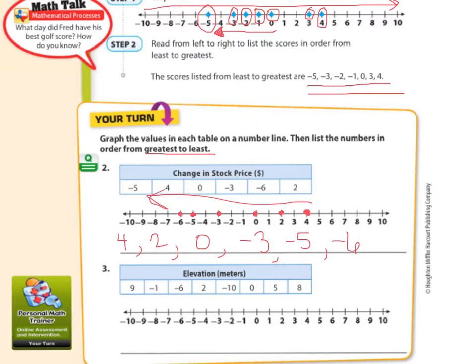A change in stock price — this is given in dollars. Is this a negative 2 or a positive 2? It's a positive 2, so that means the stock increased $2. A stock is a little piece of a company that people own. If it's a negative number, that means the price dropped — this one dropped $6. And what does a zero mean? A zero means there was no change at all.